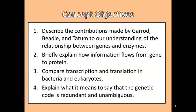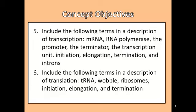Let's go over the objectives for this chapter. Be able to describe the contributions made by Beadle and Tatum to our understanding of the relationship between genes and enzymes. Be able to briefly explain how information flows from gene to protein. Be able to compare transcription and translation in bacteria and eukaryotes. Explain what it means to say that the genetic code is redundant and unambiguous.